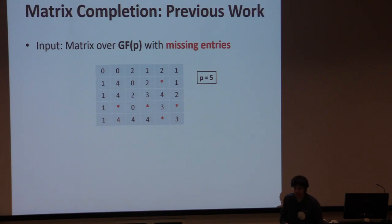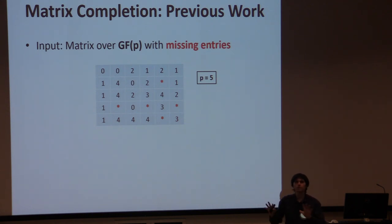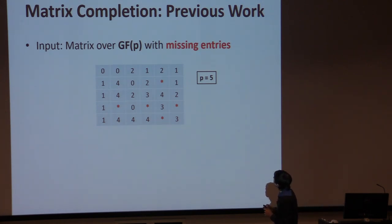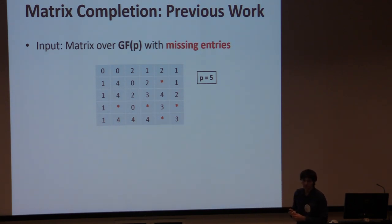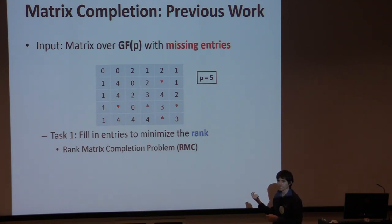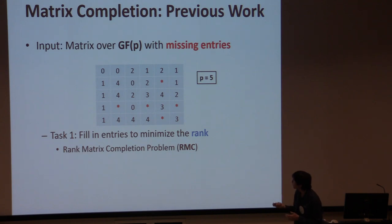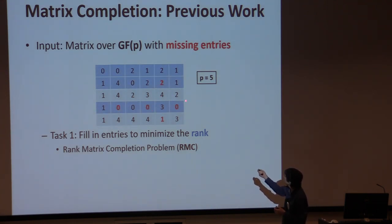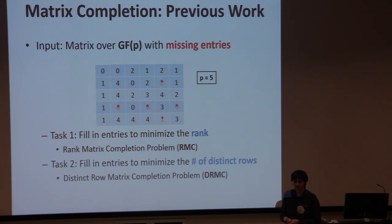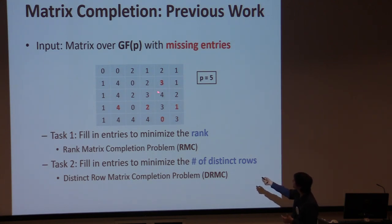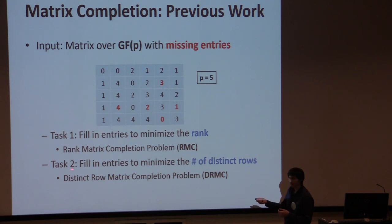I want to very briefly speak about previous work we did on this topic before moving on to more recent results, which might be more interesting for this workshop because the more recent ones use kernelization. We considered two measures in our previous work. One was minimizing the rank of the matrix — the size of a basis. For instance, here you could complete the matrix in this way and get a basis of size 3. Another option was to fill in entries so that we minimize the number of distinct rows. So these are two well-defined problems: rank matrix completion and distinct row matrix completion.